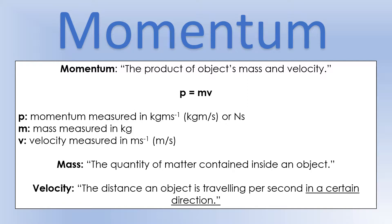We define momentum as the product of an object's mass and velocity — product meaning we multiply them together. That's our definition of precisely what momentum is. From that description you can figure out this is really an equation. We use the symbol P for momentum, and M and V for mass and velocity as usual.